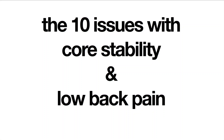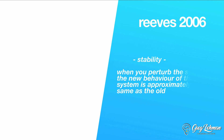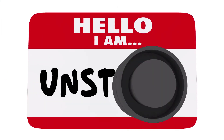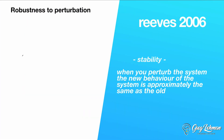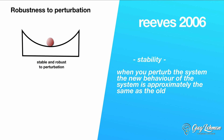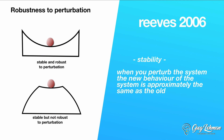Alright, fastest recap ever on the 10 issues with core stability and low back pain. First, what is stability? Reeves 2006 says when you perturb the system, the new behavior of the system is approximately the same as the old. You need a perturbation and then the system comes back to its resting state. There's a system that's stable and robust — if you knock that ball, it'll jiggle and come back. But this other system is stable yet not robust; if you knock it a lot, it'll fall off and not return to its resting state.